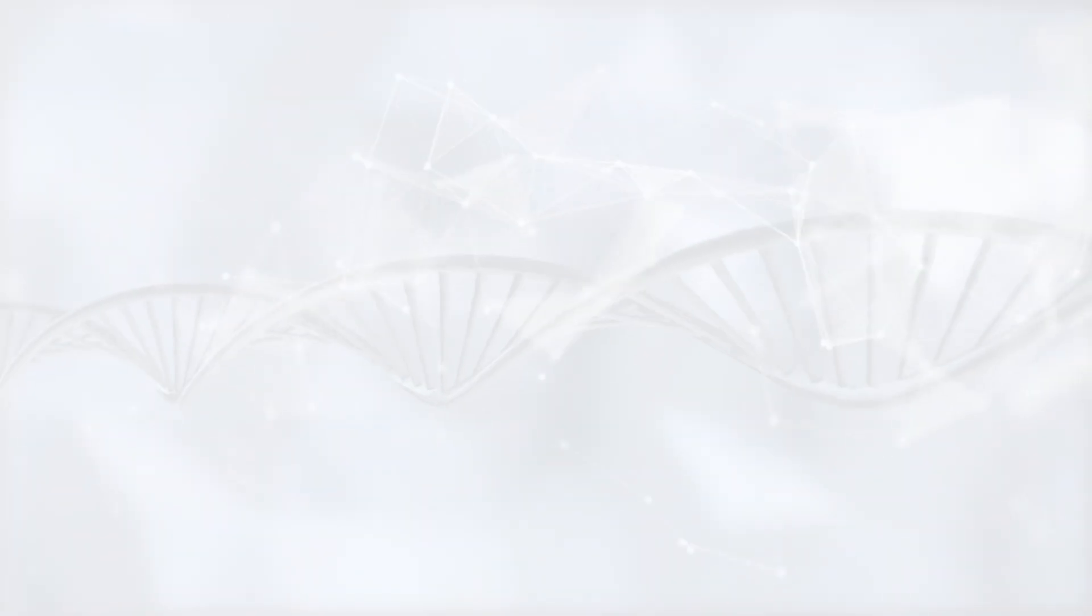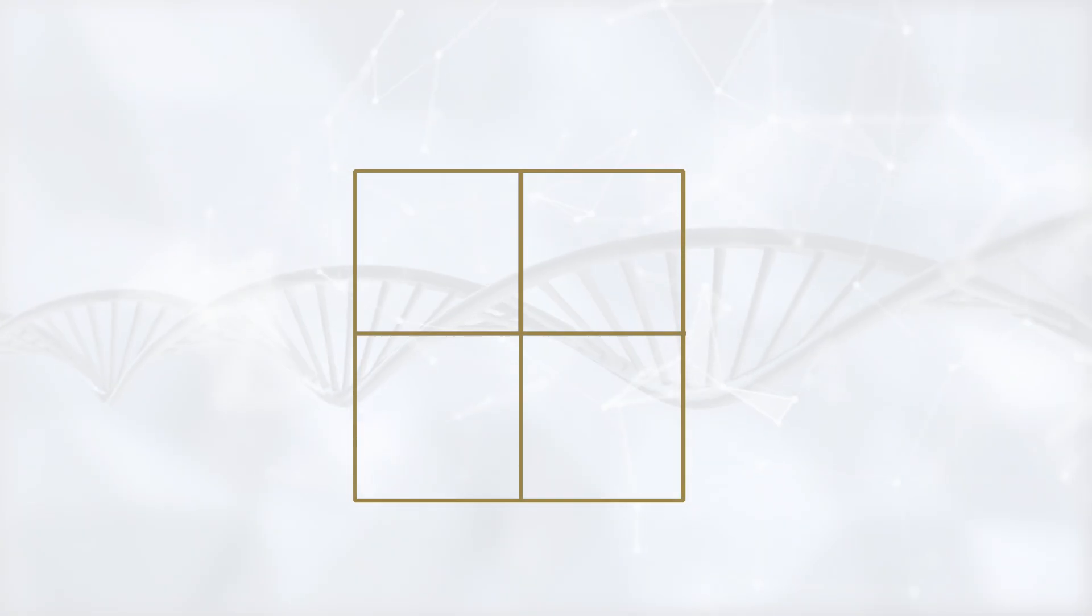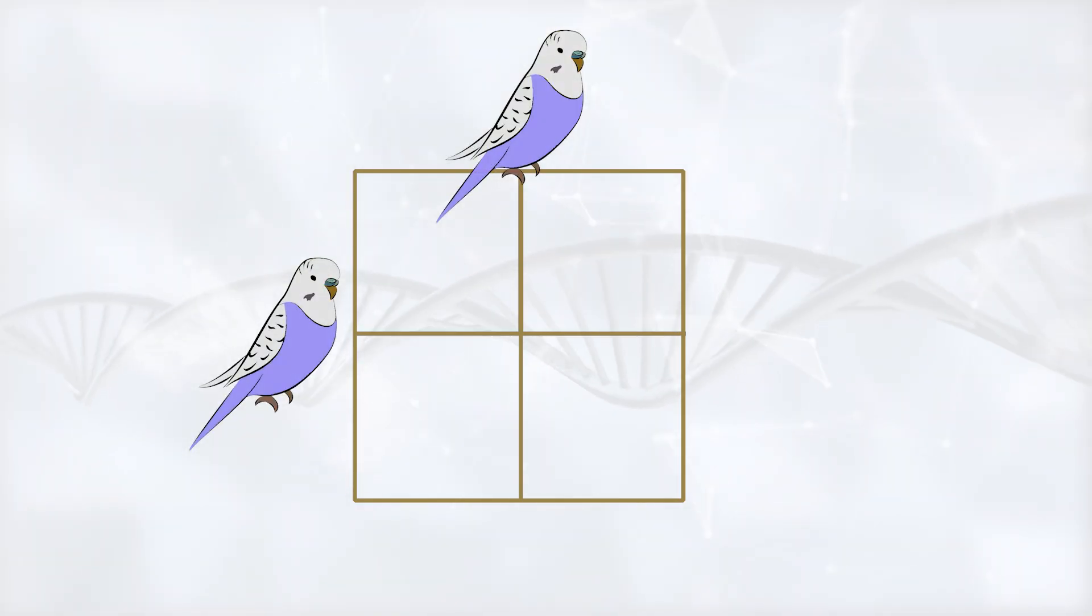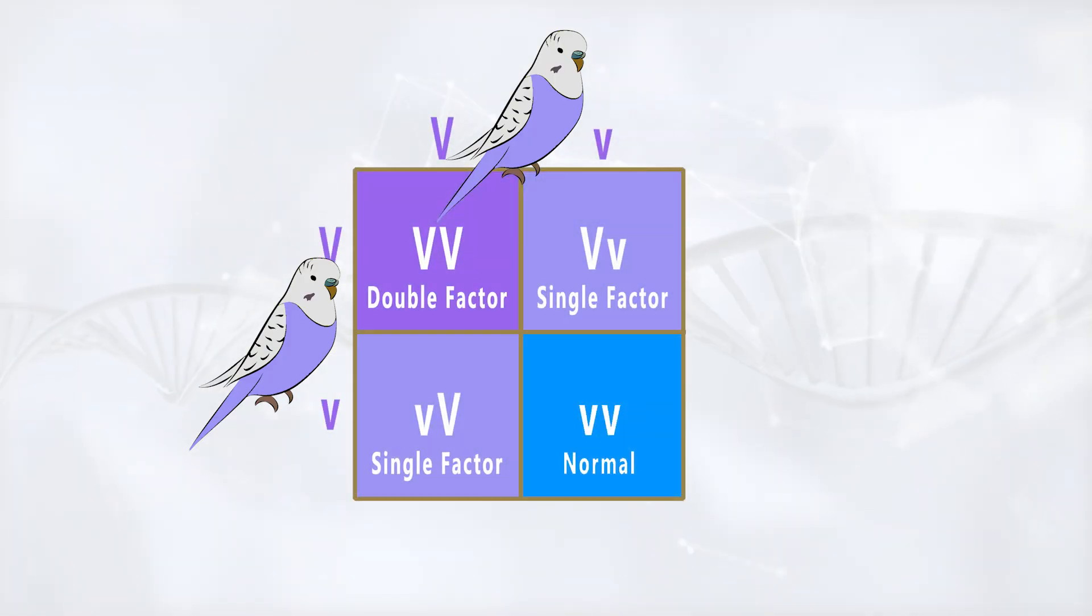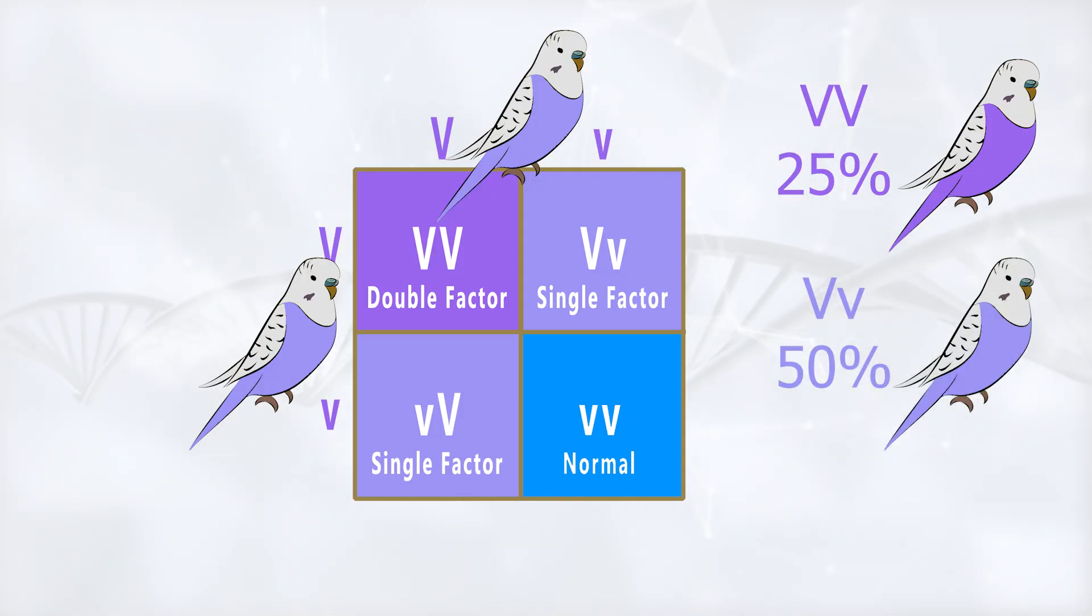Now let's see the genetics behind this gene. For simplicity, let's take two parents each having single factor violet. We go to the Punnett square and see what would happen. And we can see that 25% of their offspring will be double factor violet. 50% will be single factor violet just like their parents. And 25% will have no violet gene.